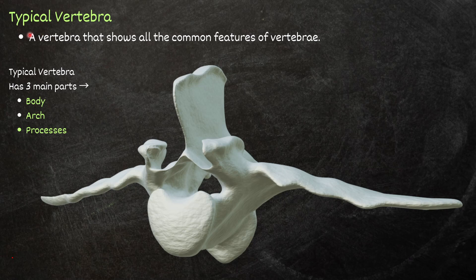In this video, we will discuss the structure of a typical vertebra. A vertebra that shows all the common features is called a typical vertebra. A typical vertebra has three main parts: body, arch, and processes.